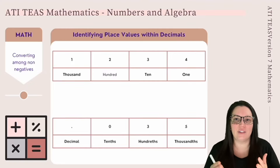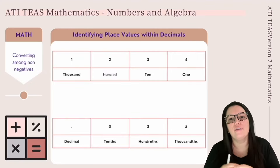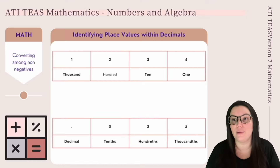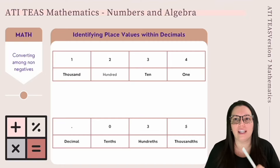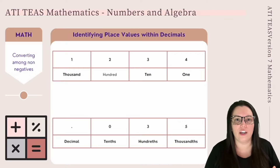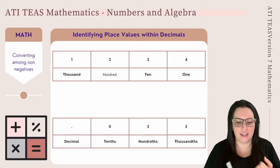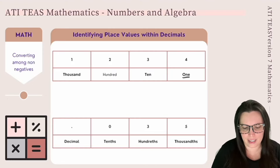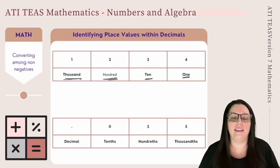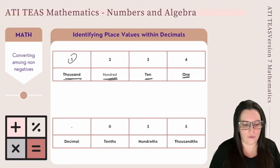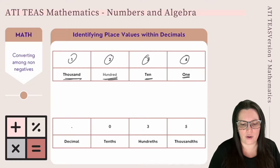Sometimes you'll need to identify place values with decimals. Every digit in a number has a place value that tells us what that digit is worth in relation to the other digits. For example, in the number 1234, there are four digits: 4 is in the ones place, 3 is in the tens place, 2 is in the hundreds place, and 1 is in the thousands place.